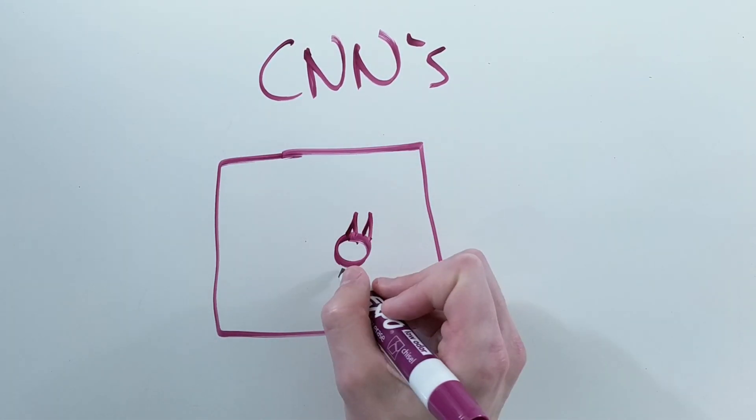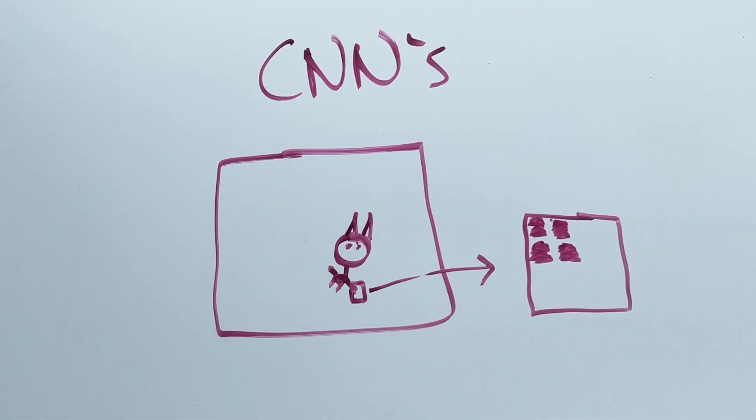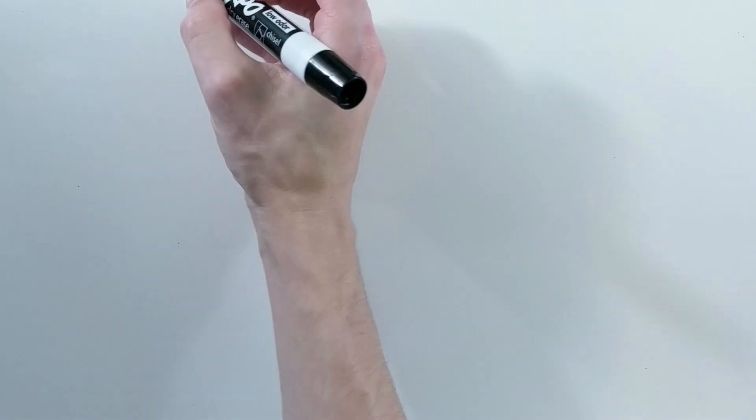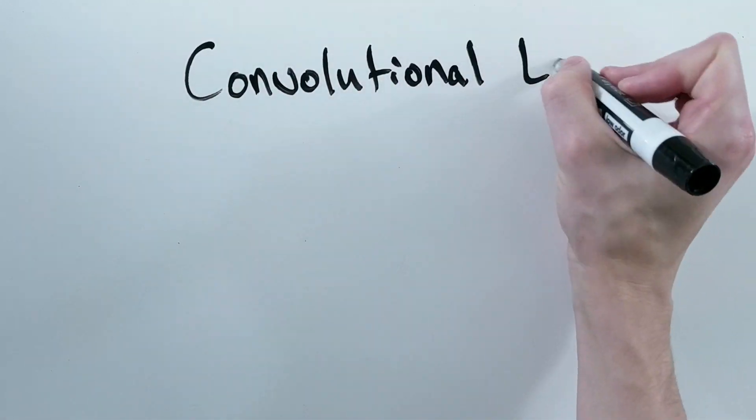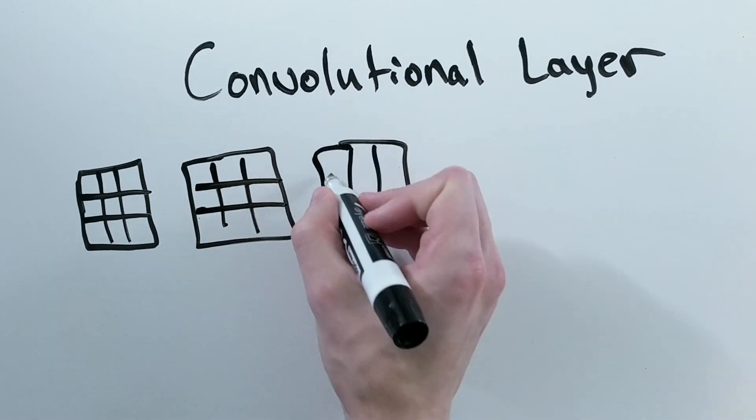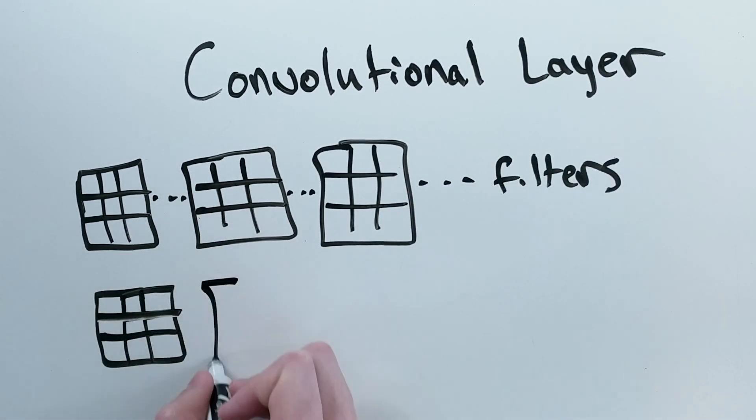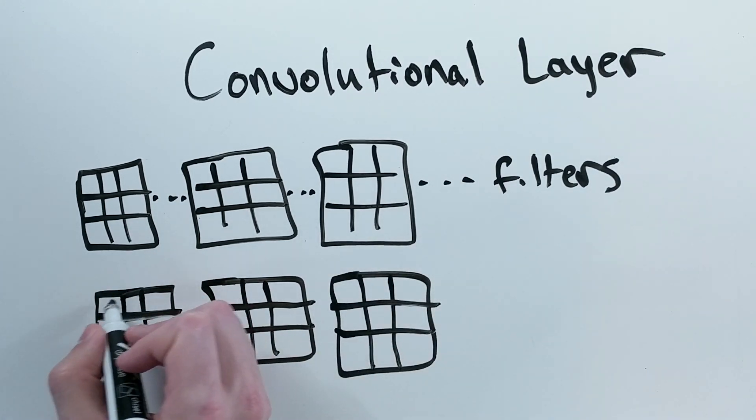The obvious example is pictures, where each pixel is related to all of the pixels around it. The core unit of a convolutional neural network is the convolutional layer. What convolutional layers do is train a large number of small matrices called filters to understand relationships between neighboring data.